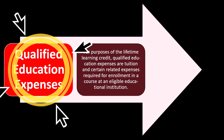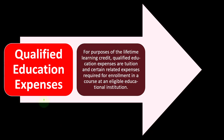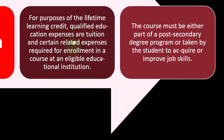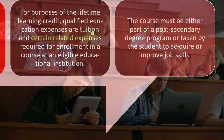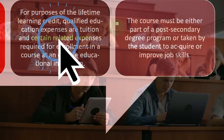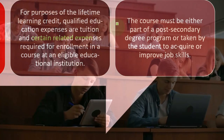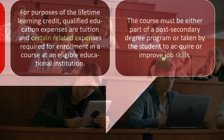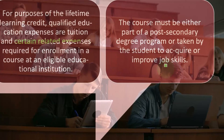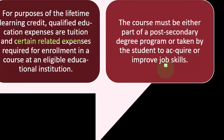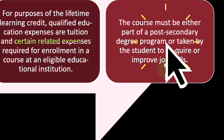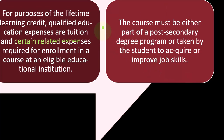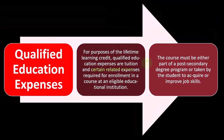Qualified education expenses for purposes of the lifetime learning credit are tuition and certain related expenses required for enrollment in a course at an eligible educational institution. The course must be either part of a post-secondary degree program or taken by the student to acquire or improve job skills. That's a bit more expansive than the American Opportunity Credit, which typically has to be geared toward a degree or certificate — here they've added the ability to acquire or improve job skills.